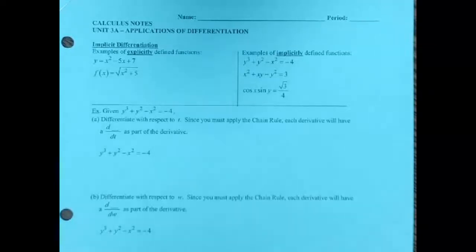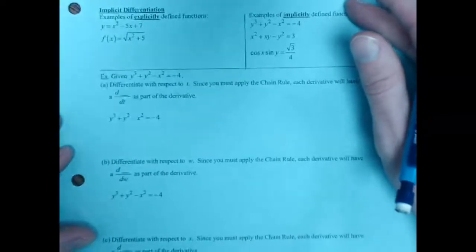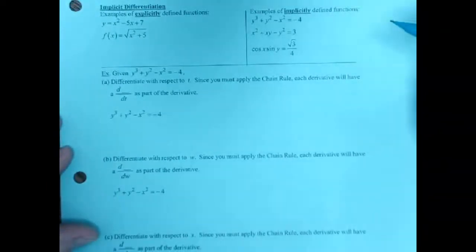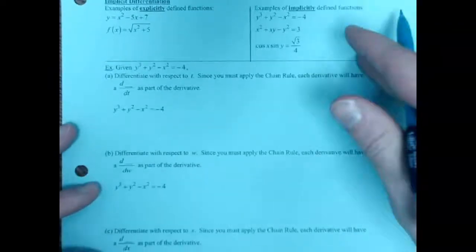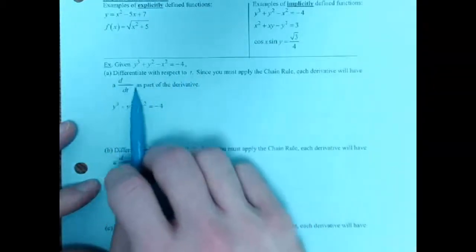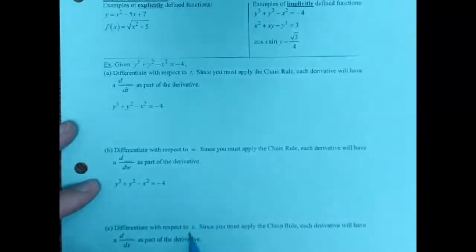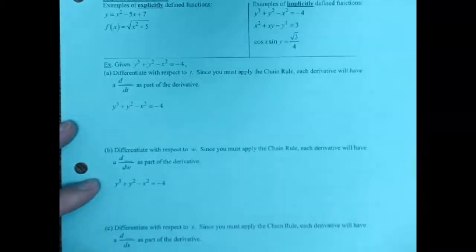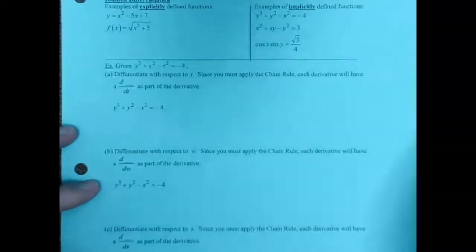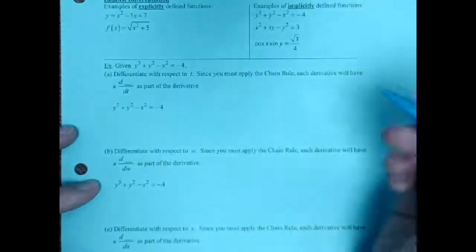Let's work through this page. We have the equation y³ + y² - x² = -4, and we're going to take the derivative a few times. First, we'll take the derivative with respect to t — the notation tells me that with d/dt. We'll also do it with w, then with x, and just for fun, with y too. When the variables don't match, you're going to need to do chain rule.